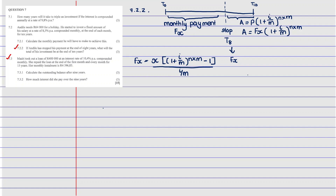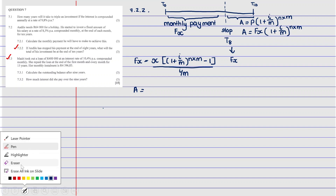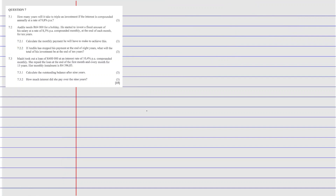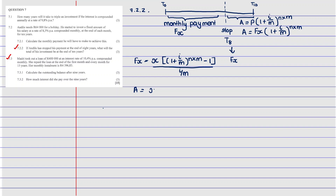So now A equals: x × [(1 + i/m)^(n1×m) − 1] / (i/m), and this whole thing is then multiplied by (1 + i/m)^(n2×m). Note that n here and n there are not the same — we call the first one n1 and the second one n2.